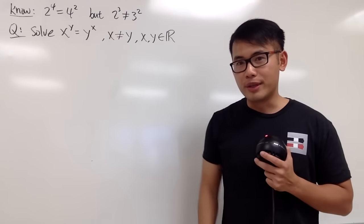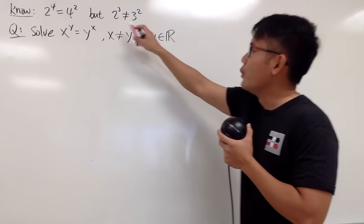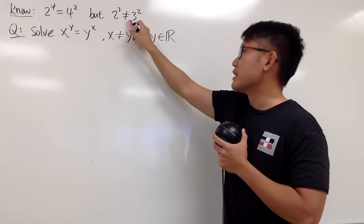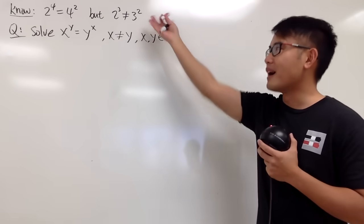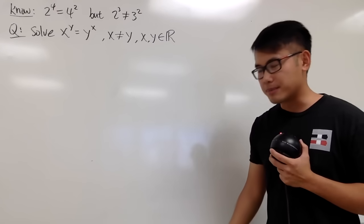But that's not generally true because, for example, when we have 2 to the third power, which is 8, this is not the same as 3 to the second power because that's 9. So they aren't equal to each other all the time once you switch the base and the exponent.